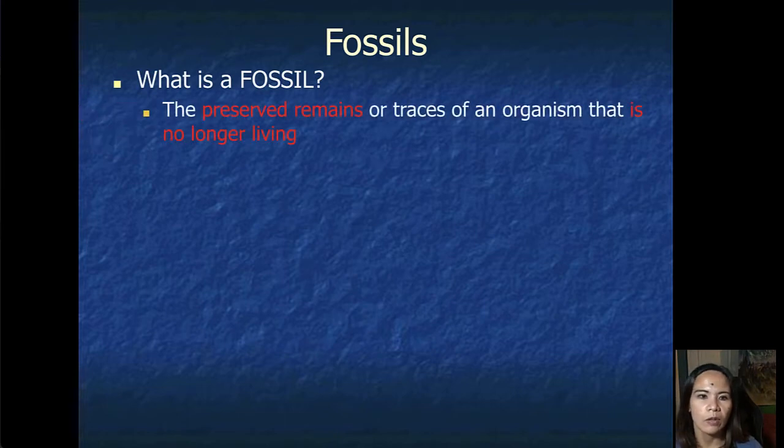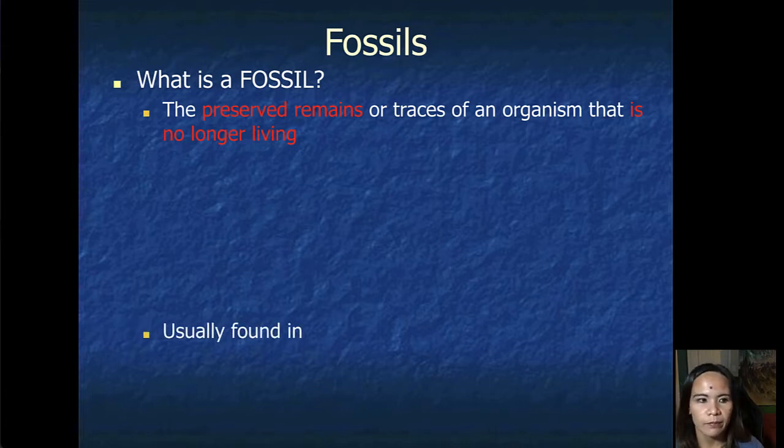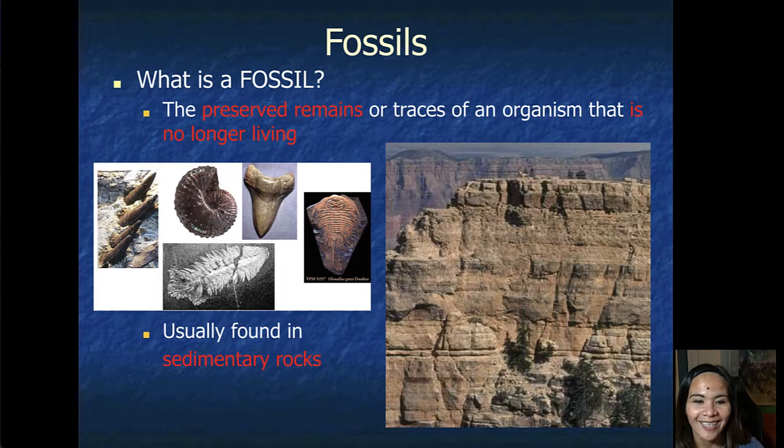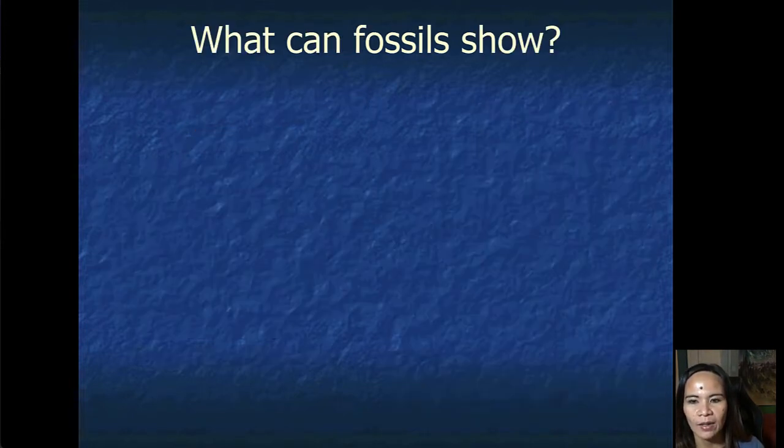What is a fossil? Well, a fossil is the preserved remains of organisms or traces of these organisms that are no longer living. This is usually found in sedimentary rocks, as you can see over here in this picture, stuck in layers of rocks, just like here in the Grand Canyon.